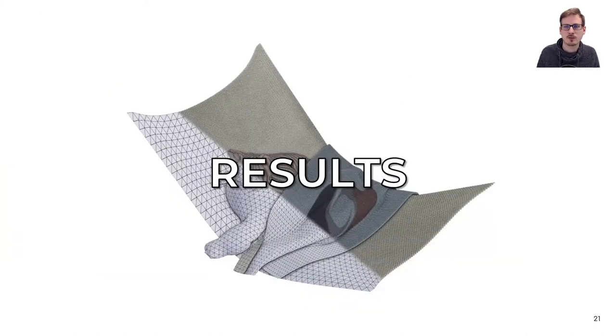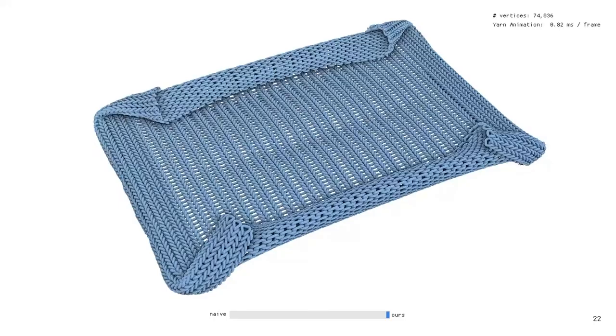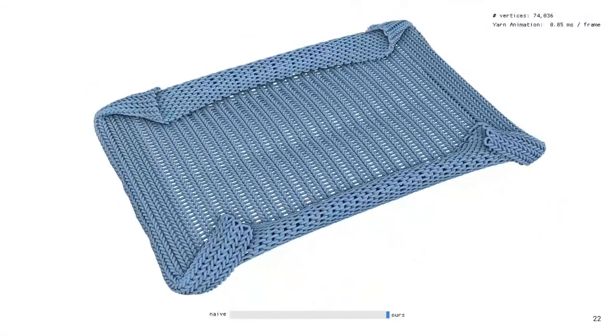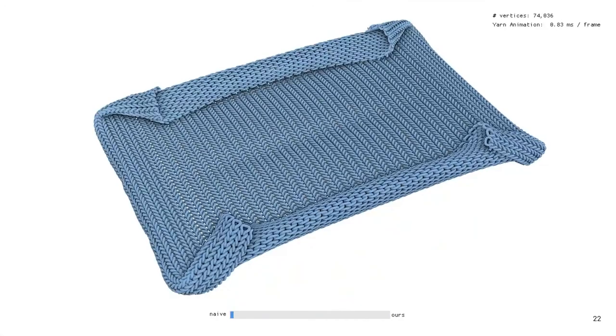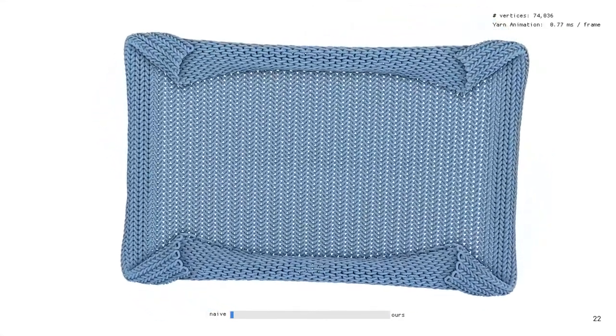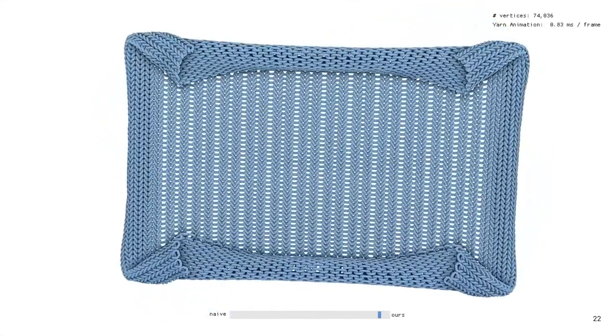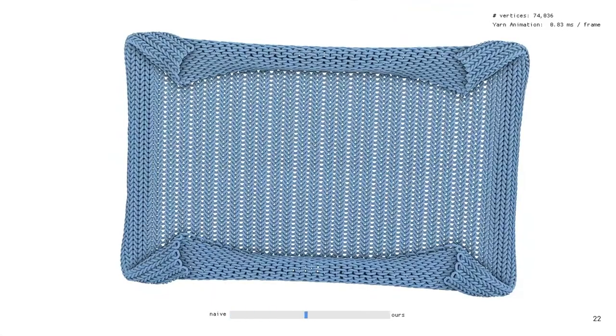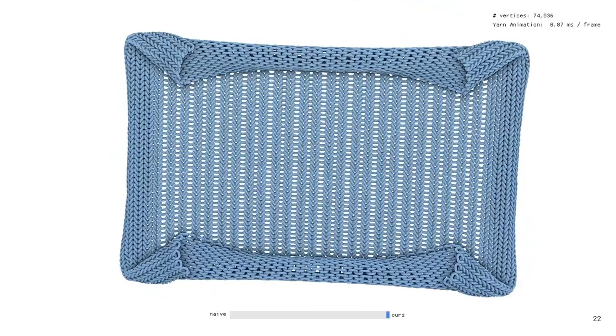Let's now take a look at a couple of results produced with our method. We start with the example from the beginning, of a knitted cloth being stretched. Here I'm toggling between naive embedded mapping and our mechanics-aware approach, and we can see that ours adds the important detail of knits tightening, which makes the cloth more transparent.